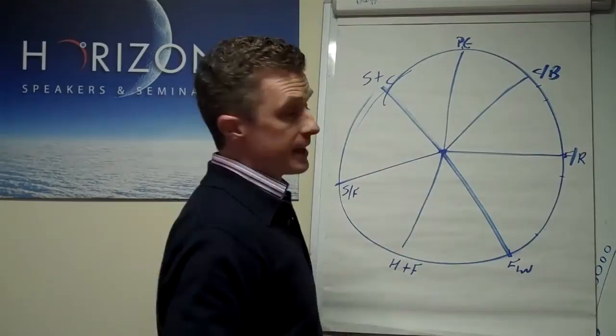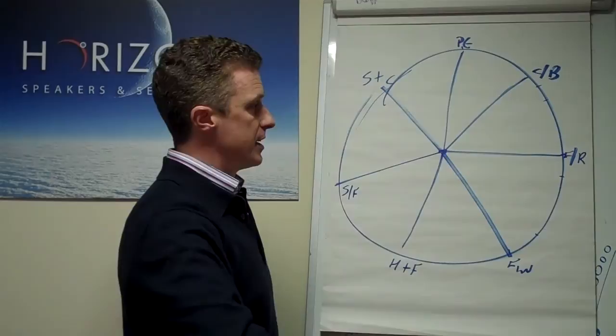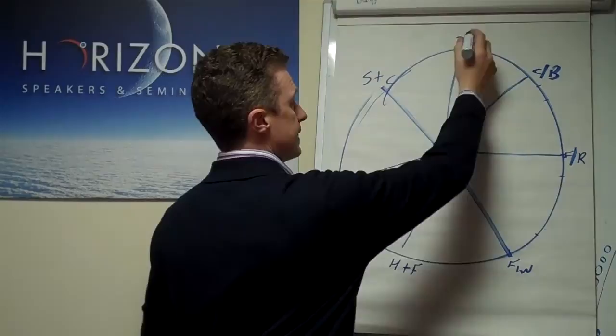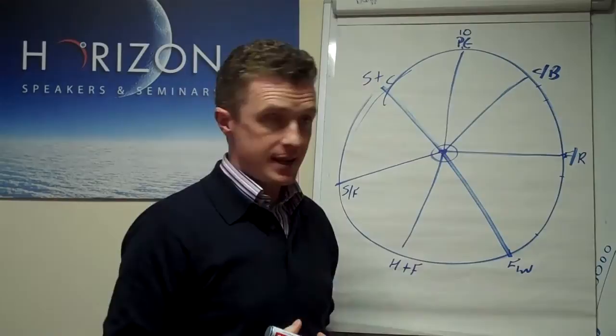and finally, spiritual and contribution. Basically what we do is let the center of the circle represent 0, the outside of the circle represent 10. You mark each of these seven areas 0 to 10.